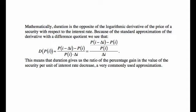We can approximate the derivative with a difference quotient. The duration is approximately equal to the price after a slight decrease in interest rate minus the current price, divided by the current price times the change in interest rate — which is like the percentage performance of the security as a result of this change in interest rate, divided by the change in interest rate.